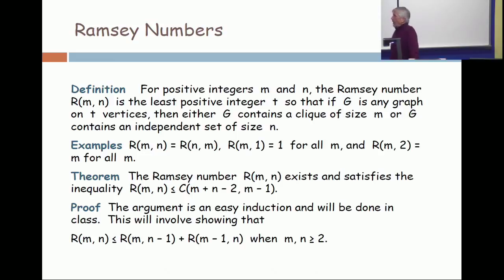Also, R(m,1) is 1. Just think about what it's saying. In a large graph, you either want a clique of size m or you want an independent set of size 1. What's an independent set of size 1? A vertex. So you don't need a very big graph to get a vertex. You just need 1. So R(m,1) is 1.